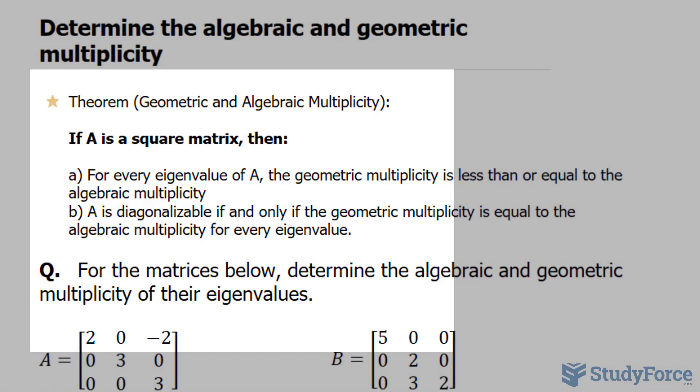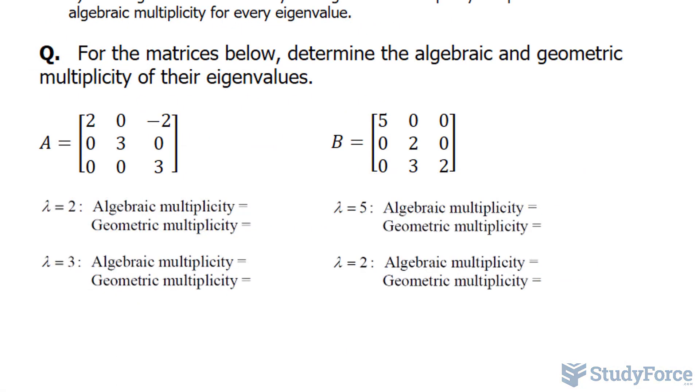With that being said, we have the two questions underneath. For the matrices below, determine the algebraic and geometric multiplicity for their eigenvalues. The eigenvalues here are 2 and 3 repeated. For this one, it's 5 and 2 repeated.